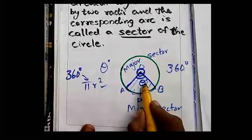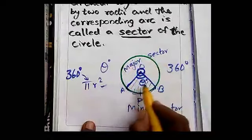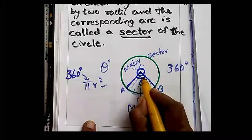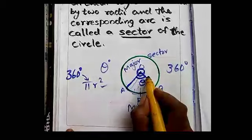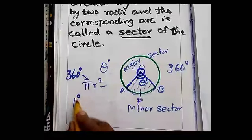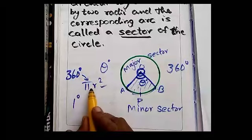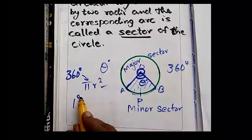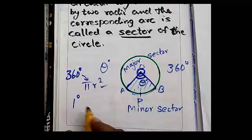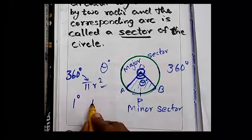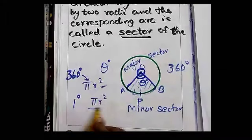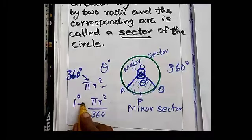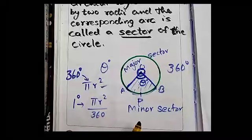If the angle at the center is 360 degrees, the area is πR². Now we are selecting a portion of the circle which makes an angle of theta degrees at the center. If it is 360 degrees the area is πR², and if it is 1 degree, the area of that portion is πR²/360.